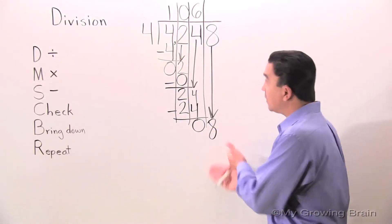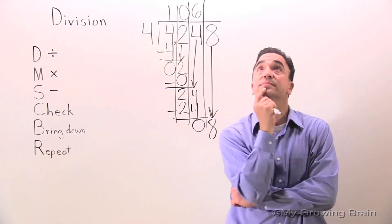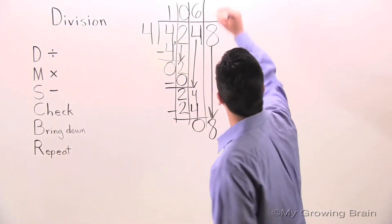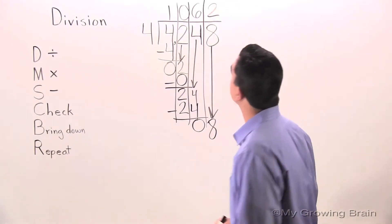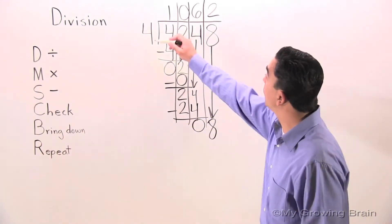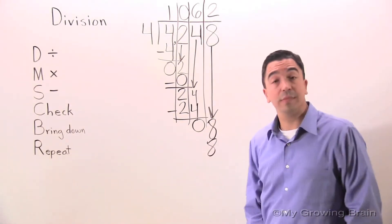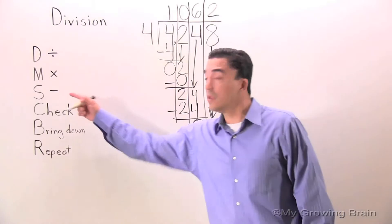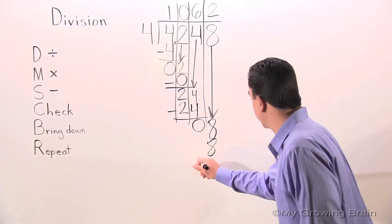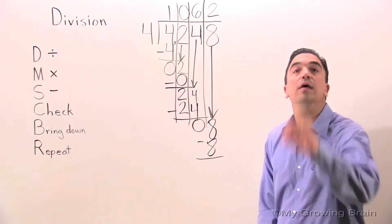Divide. 8 divided by 4, or 4 into 8, 2 times. Next step: multiply. 4 times 2 is 8. Next step: subtract. 8 minus 8 is 0.